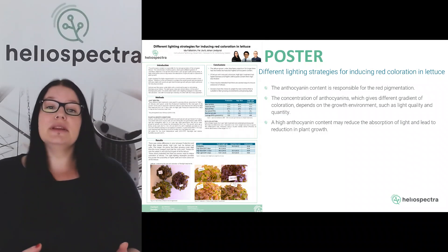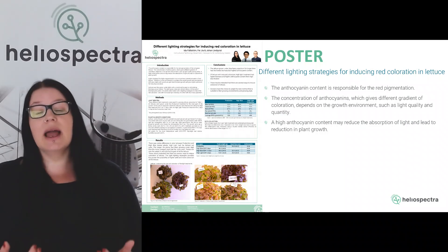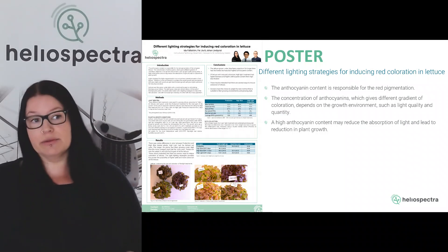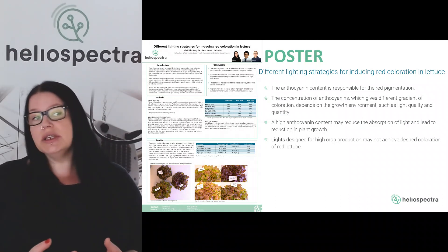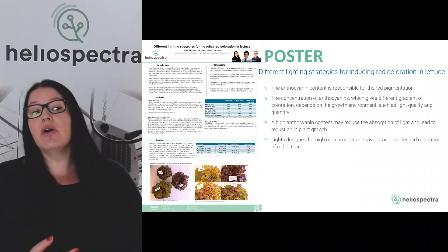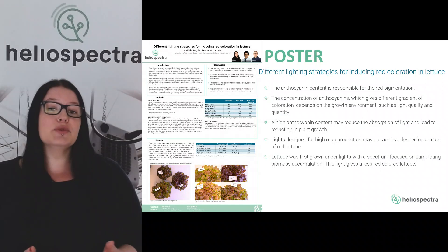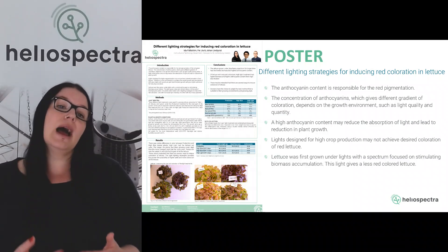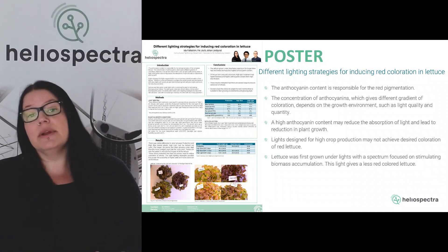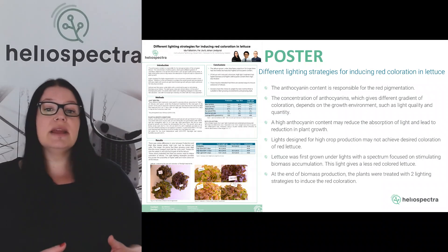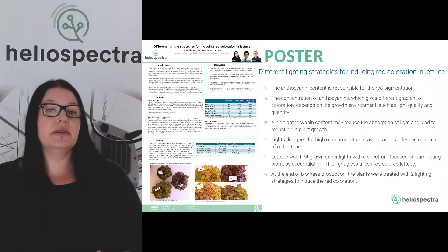A high anthocyanin content may produce a really nice, beautiful red lettuce, but it may reduce absorption of light and therefore lead to a reduction of plant growth. Lights designed for high crop production may not achieve the desired coloration of lettuce. So lettuce was first grown under a light spectrum that focused on stimulating high biomass and high crop production, but that light gave less coloration.